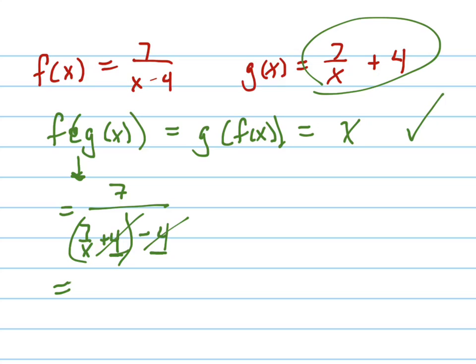They cancel each other out, right? These parentheses aren't really necessary anymore. And what's 7 over 7 over x? How do I divide by a fraction? I multiply by the reciprocal. So it's like multiplying by x over 7. And what happens to these two 7s now? They cancel. And so look, I got x. Hey, good. One for one.